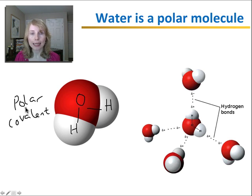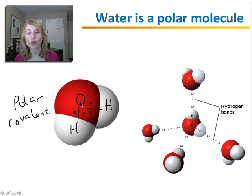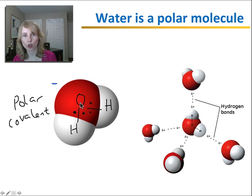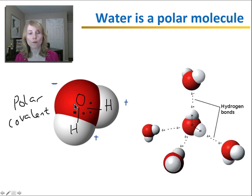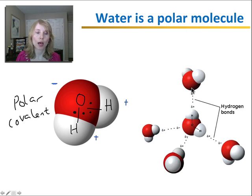Polar means that there's an unequal sharing of the electrons. Oxygen has a stronger pull on electrons — it strongly attracts them closer to itself. So the pair of electrons being shared in each of the polar covalent bonds is found closer to the oxygen, making the oxygen have a slightly negative charge. The hydrogens have a slight positive charge because the electrons are further away from them. Here you see a water molecule where the hydrogen is attracted to the negative charge on the oxygen of another water molecule. This association between the slightly negative oxygen and the slightly positive hydrogen is called a hydrogen bond.